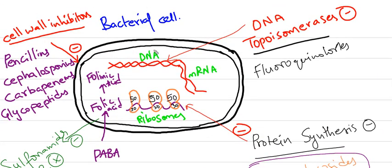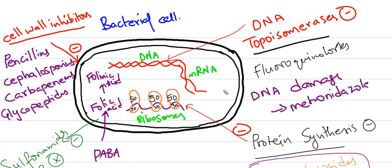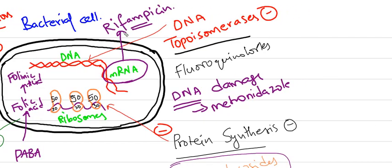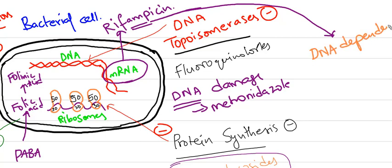And another one which damages DNA - the drug which damages DNA is Nitroimidazole, that is Metronidazole. And the drug which blocks mRNA synthesis is Rifampicin. Actually, Rifampicin acts by inhibiting the enzyme DNA-dependent RNA polymerase. This enzyme is blocked by Rifampicin, thus inhibiting the synthesis of mRNA.